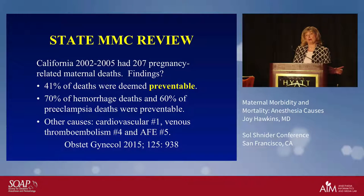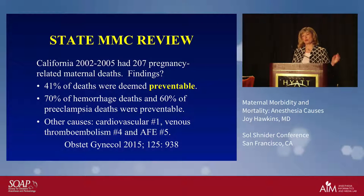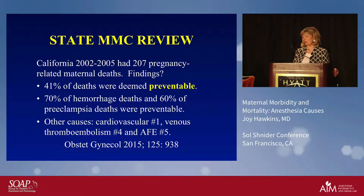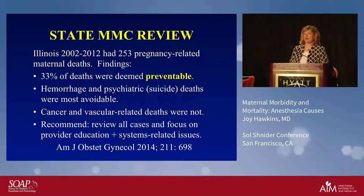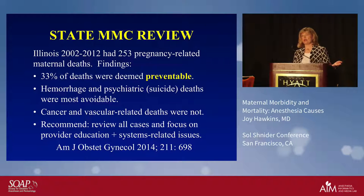The second issue that's become far more prominent is preventability. California found that 41% of their maternal deaths were preventable — most of the hemorrhage deaths and over half of the preeclampsia deaths. Illinois similarly found that a third of their maternal deaths were preventable; hemorrhage and psychiatric causes, specifically postpartum depression and suicide, were the most avoidable. They recommended case review for all maternal deaths.